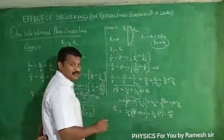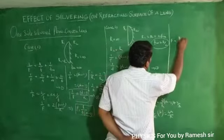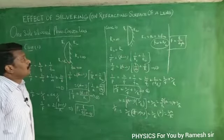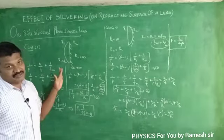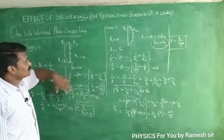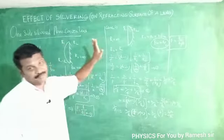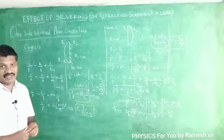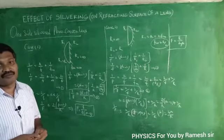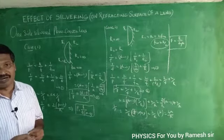So 1/F = 2μ/r. Taking the reciprocal, the effective focal length F is equal to r/2μ. So for the plano-convex lens: when the plane surface is silvered, F = r/2(μ-1), and when the convex surface is silvered, F = r/2μ. These kinds of application-oriented, critical concept questions are asked from the optics chapter — nearly 4 or 5 questions come from optics, so we have to concentrate more on this chapter.